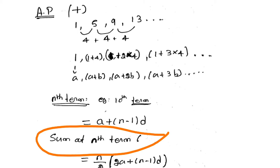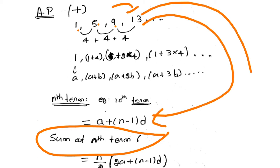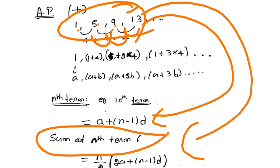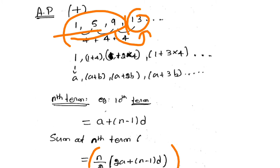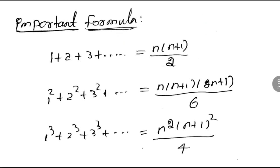The number of terms is n-1. The 4th term is 13. For sum of n terms of AP: S = n/2 times [2a plus (n-1)d]. Also: 1+2+3+...+n equals n(n+1)/2. The sum of squares: 1²+2²+3²+...= n(n+1)(2n+1)/6. The sum of cubes: 1³+2³+3³+...= [n(n+1)/2]². These are basic formulas.